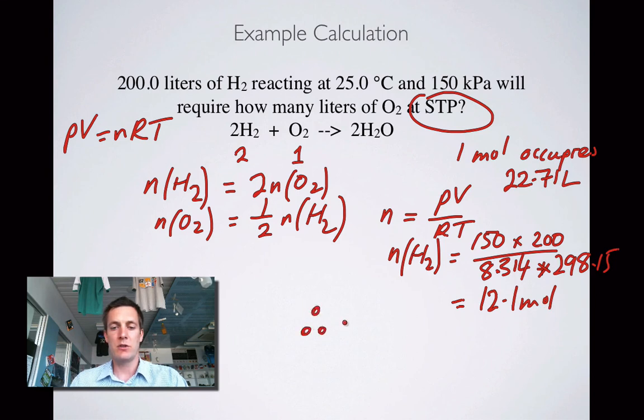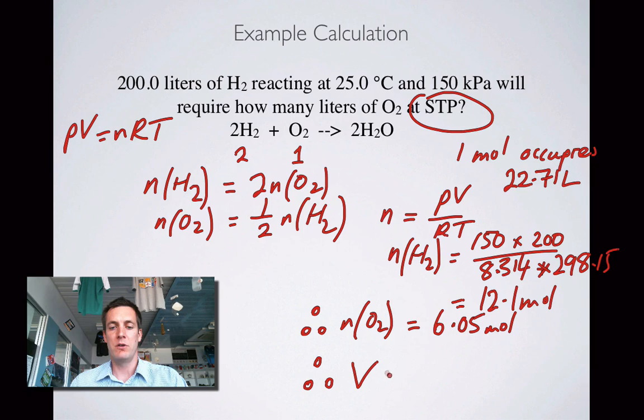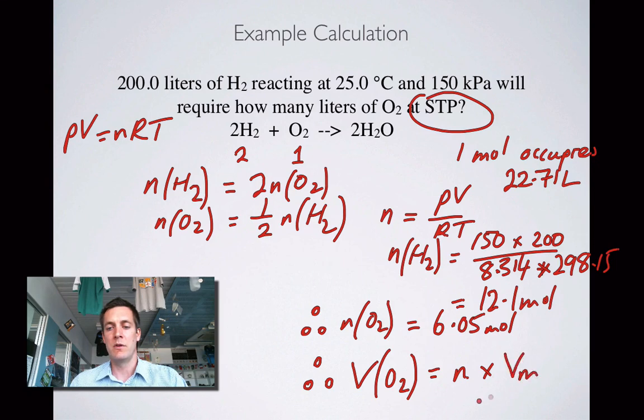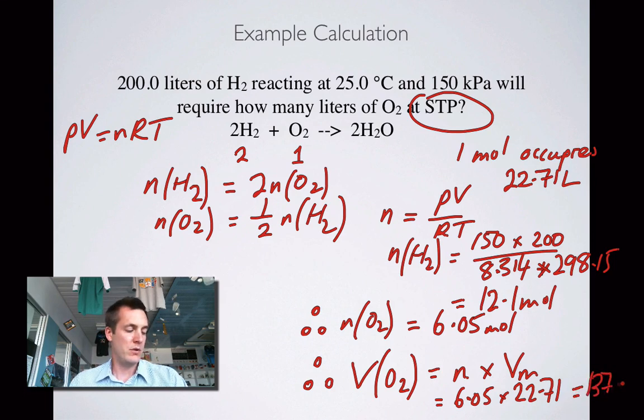And therefore the number of moles of oxygen, which we decided was half of that, is 6.05 moles, and therefore the volume of oxygen, so how many liters, the volume of oxygen which is going to be the number of moles times the molar volume because we're at STP, so that equals 6.05 times 22.71, and that equals 137.4 liters.